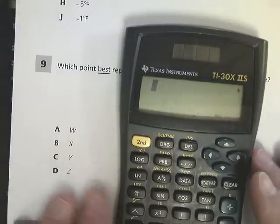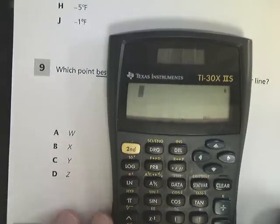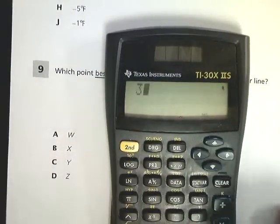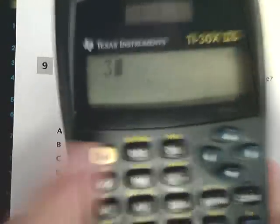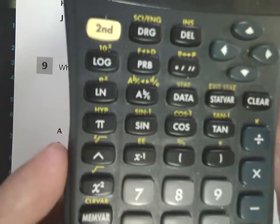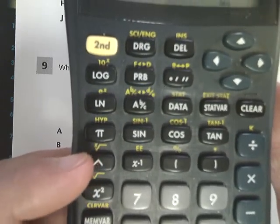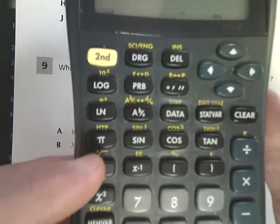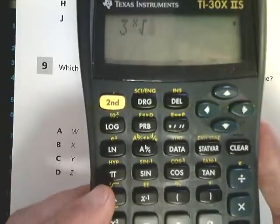So we're going to do the cube root, the third root. I'm going to hit three first to represent that. Now I'm going to hit second to get into the yellow buttons, and hit this one right here, the one above the caret. It should say X with a little root symbol there. So I'm going to hit that, looks like this.